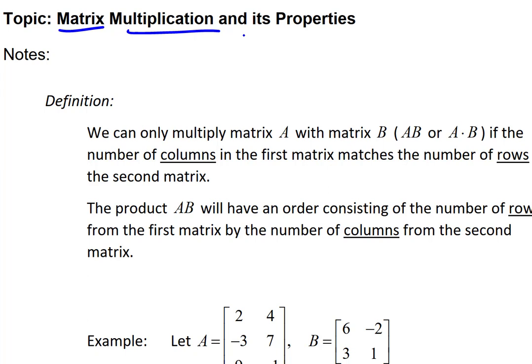So let's start with the definition. We can only multiply matrix A with matrix B — denoted by writing A and B together, or A dot B, just like a dot might be used for multiplication of real numbers. It turns out you can only multiply matrix A with matrix B if the number of columns in the first matrix matches the number of rows in the second matrix. The reason why will become evident as we demonstrate the multiplication, but keep that in mind.